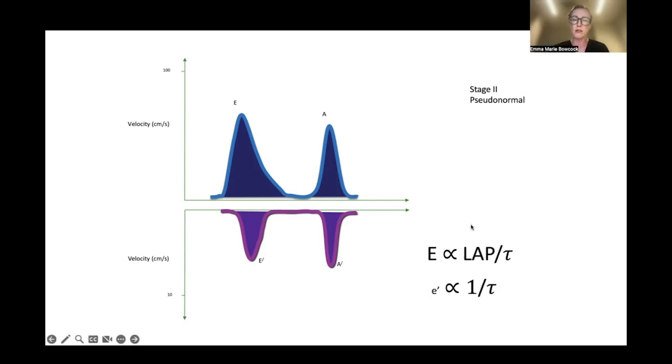The reason we can't just rely on our E to A value is because normal athletes that are fit and well can have E to A ratios of 3 or 4. We need to be able to differentiate those that are sick with diastolic dysfunction and those that are just fit and well. The reason is your E-wave is load dependent and proportional to your left atrial pressure.